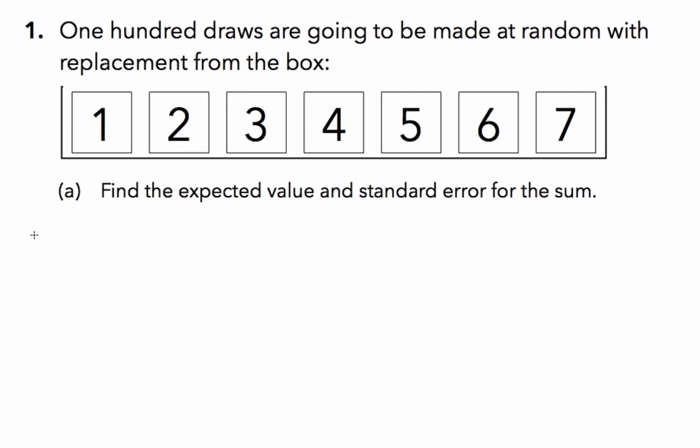The first part of question 1 asks us to find the expected value of 100 draws made from the cards in the box shown here. The expected value is really the sum of all these cards. We begin by finding the mean of our set of cards, the average value of the cards in the box. As we have done all semester, we define the mean as the sum of the values divided by the number of values in the box.